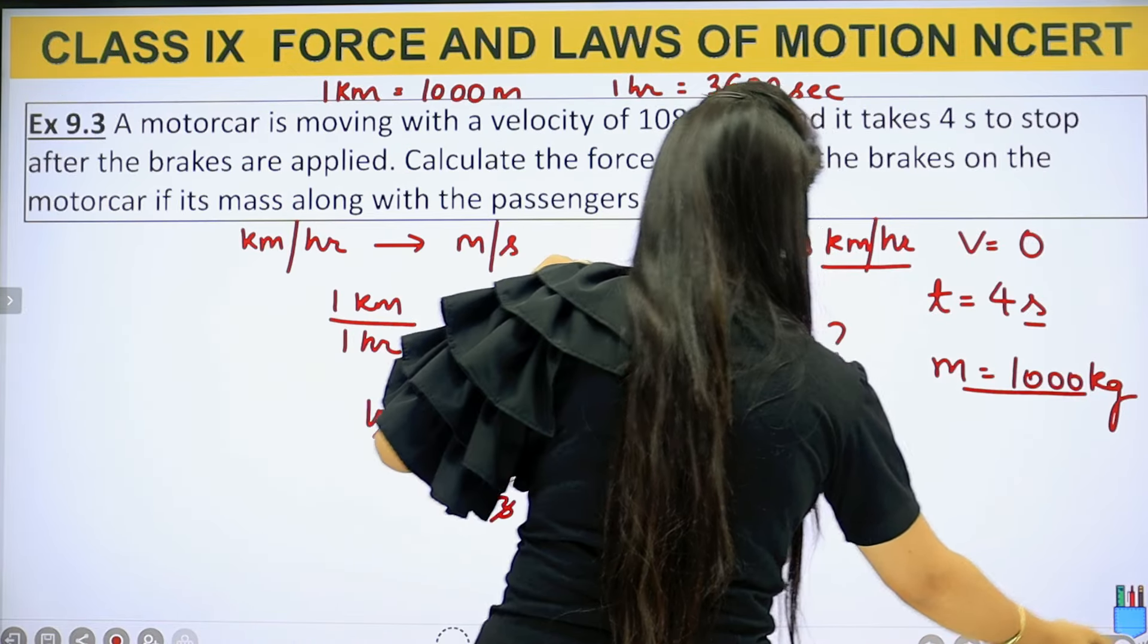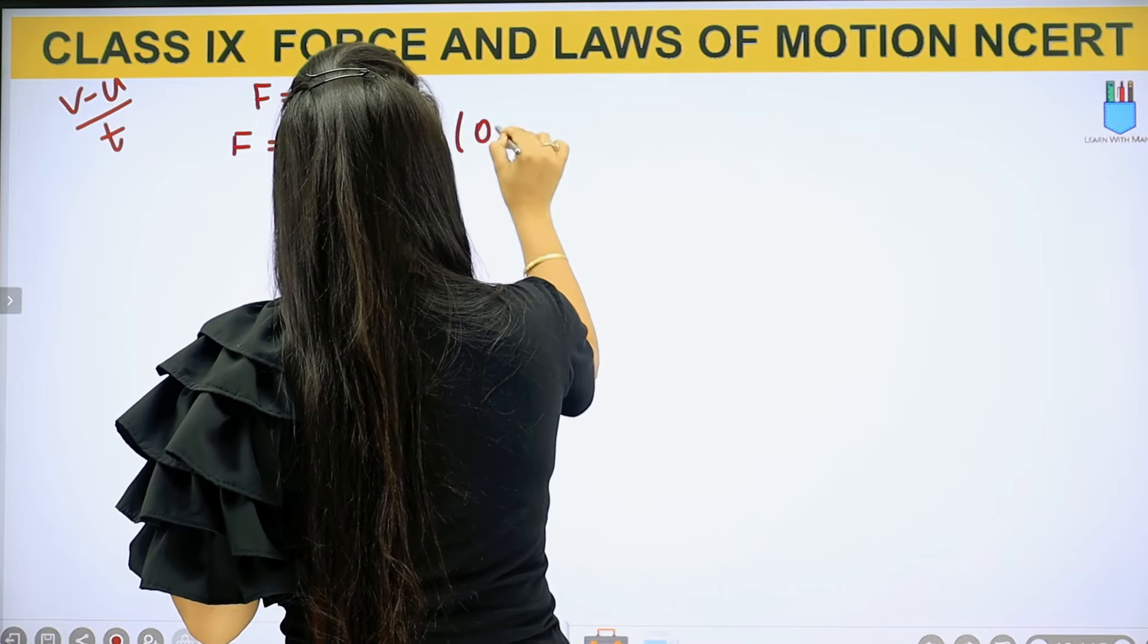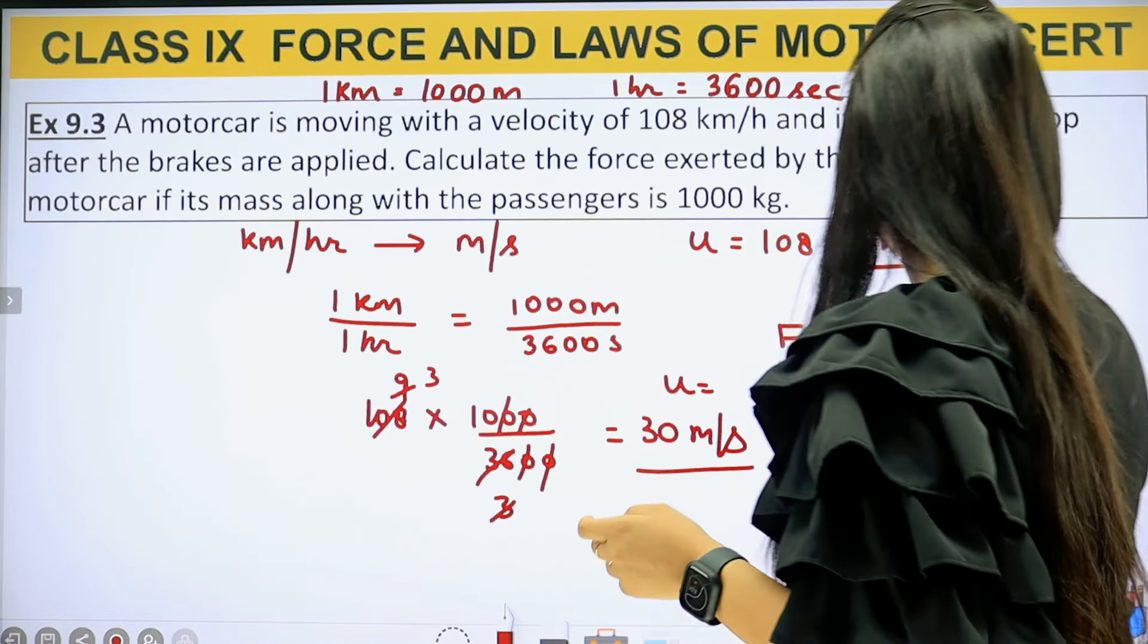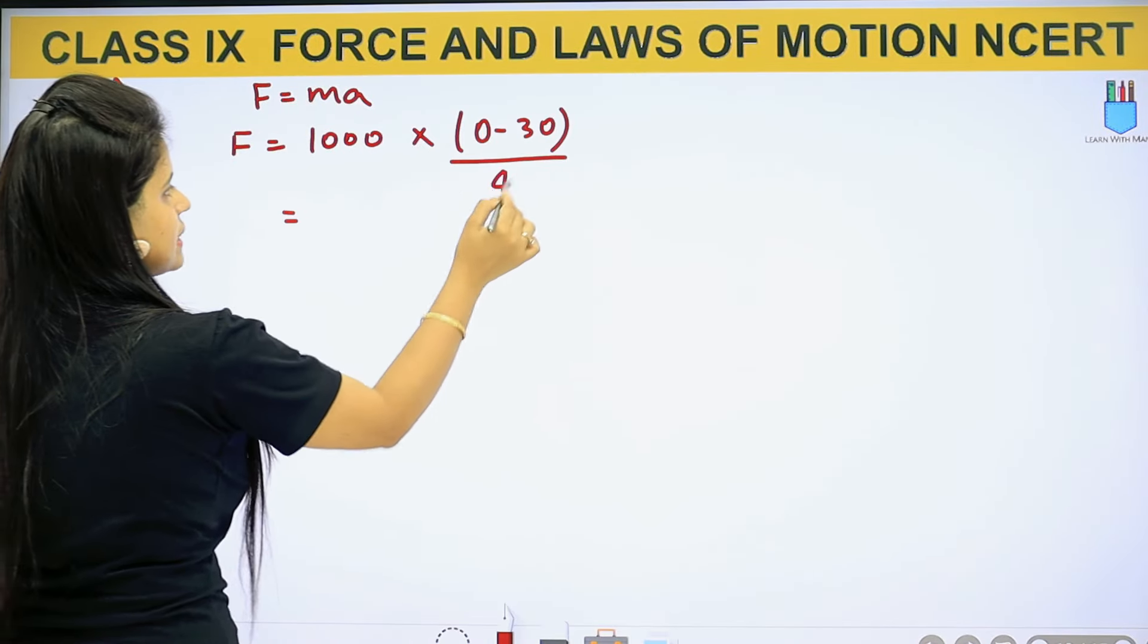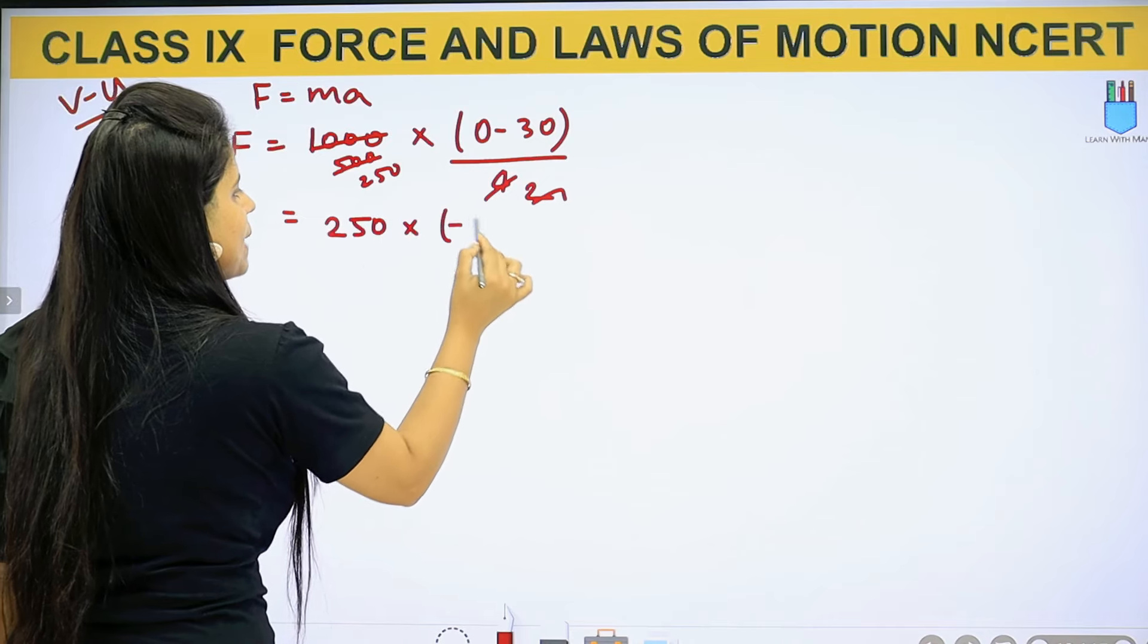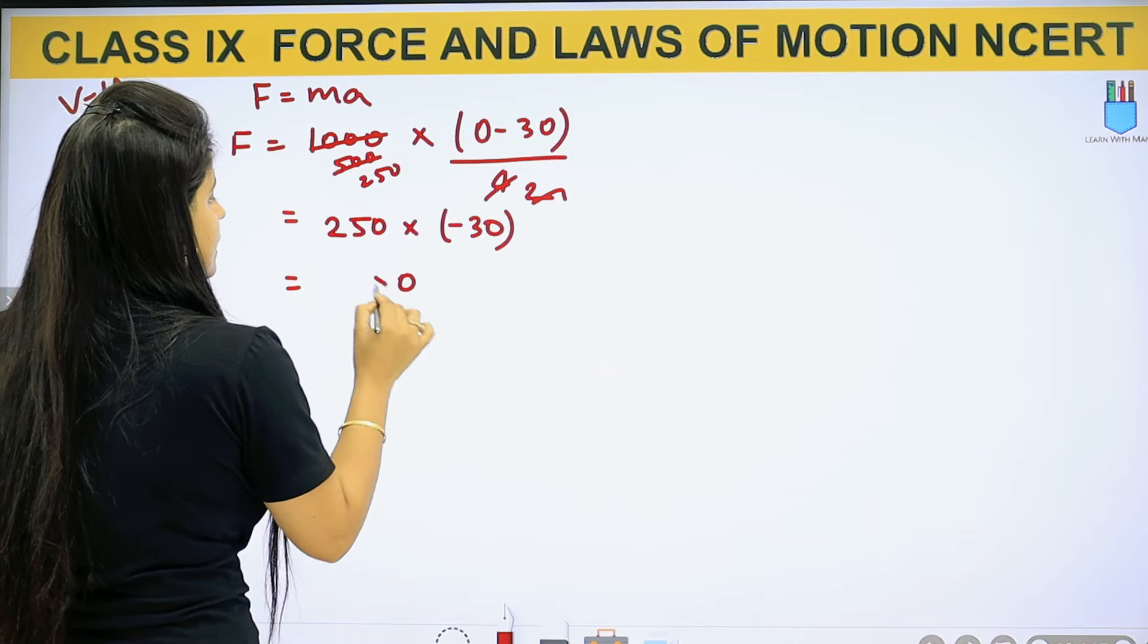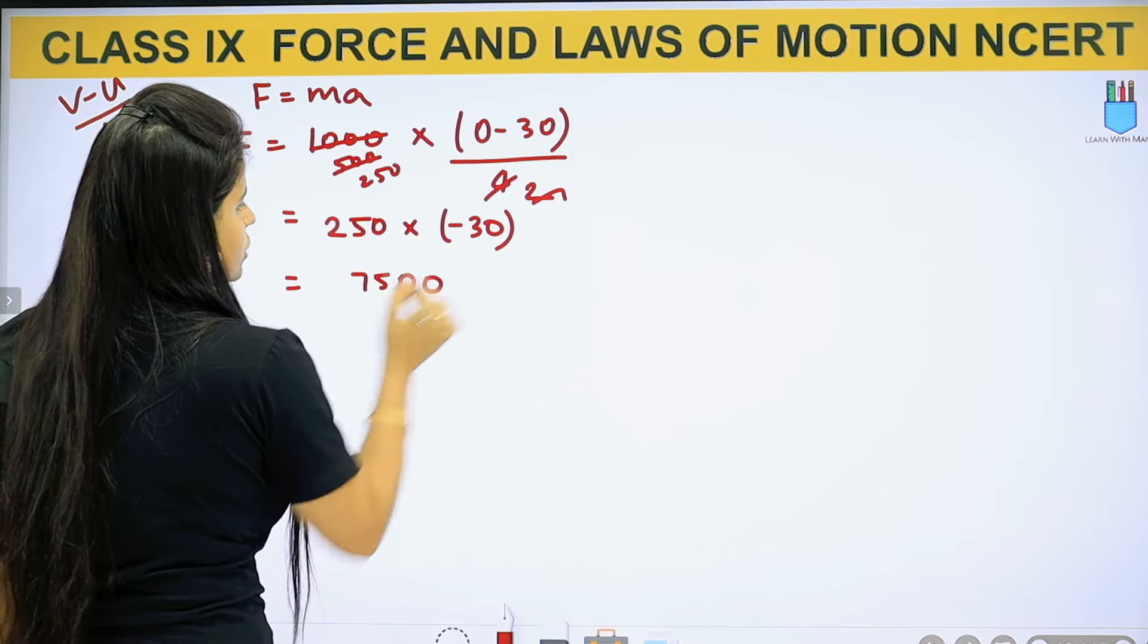So v is 0, u is 30, t is 4 seconds given. So now we have to solve it. We will cancel: do it with 2, do it with 2, do it with 500, again do it with 2. So we have 250 multiplied by minus 30: 5 into 0 is 0, sorry, 3 into 0 is 0, 5 threes are 15, 3 twos are 6, 7, and 7 is 0. 30 is minus. So how much force has it? Minus 7500 Newton.